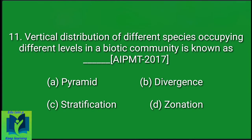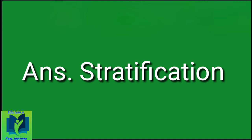Vertical distribution of different species occupying different levels in a biotic community is known as: Option A: Pyramid. Option B: Divergence. Option C: Stratification. Option D: Zonation. Answer: Stratification.